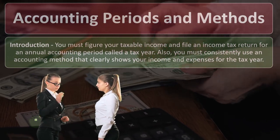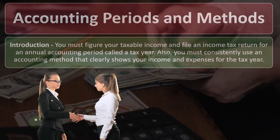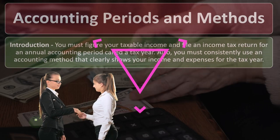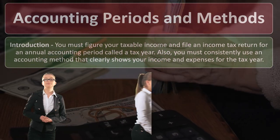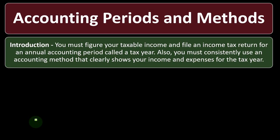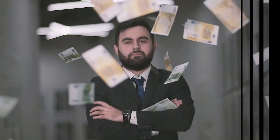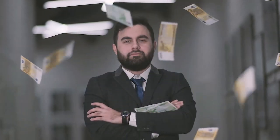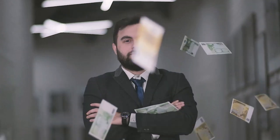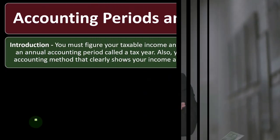You must consistently use an accounting method that clearly shows your income and expenses for the tax year. So we have to have our income reported for a year's time frame, and we have to have an accounting method — the two primary ones being accrual and cash method — that we are consistent on.